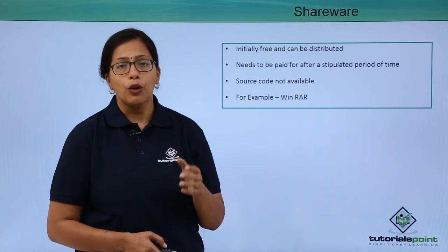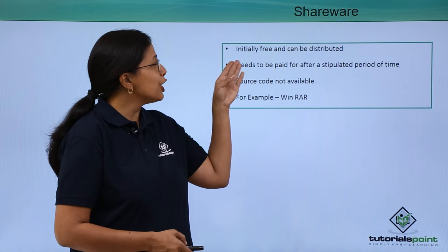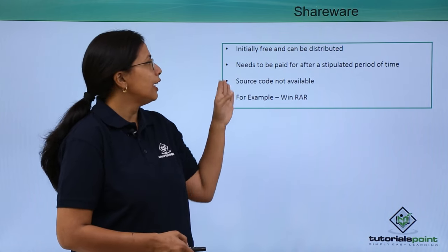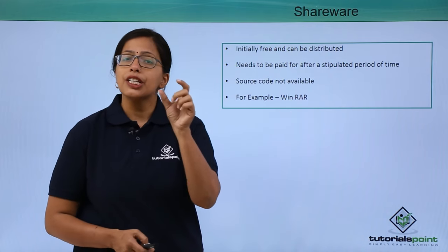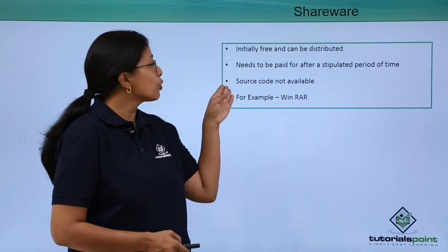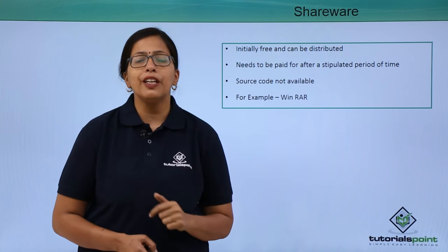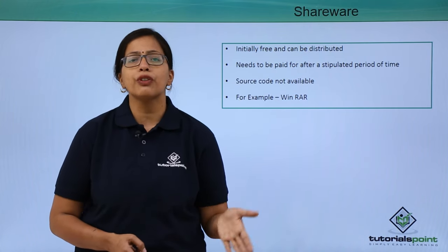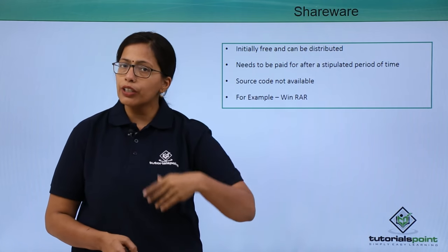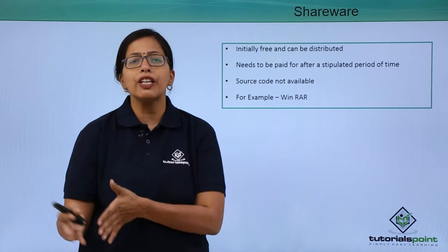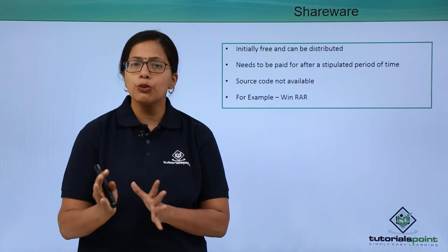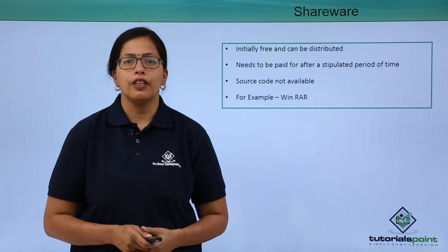There is another type of open source software called shareware. It is initially free and can be distributed, but it needs to be paid for after a stipulated period of time, because the source code is not available. For example, WinRAR, used for compressing files — you can initially download it for free, but after 45 days it will ask you to pay for it, otherwise you cannot use it. So it is an example of shareware.